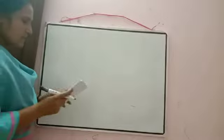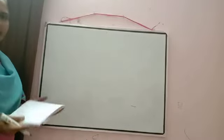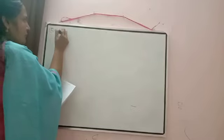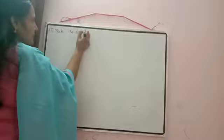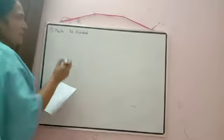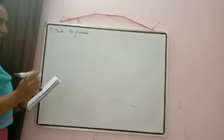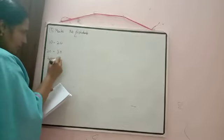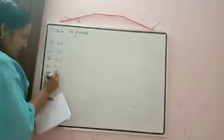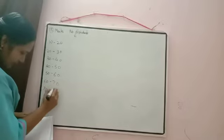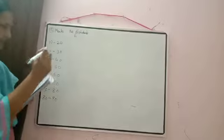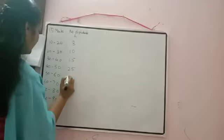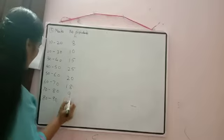The concept is the same — in all questions we calculate the mean, then the mean deviation. Write down: marks and number of students. 'Number of students' means that is the frequency. Write down the class intervals: 10-20, 20-30, 30-40, 40-50, 50-60, 60-70, 70-80, 80-90. Frequencies: 8, 10, 15, 25, 20, 18, 9, 5.